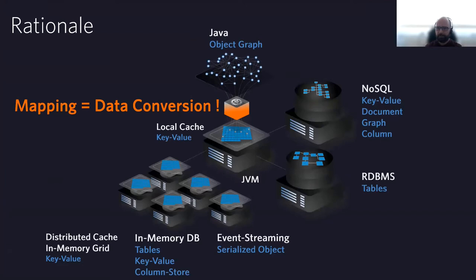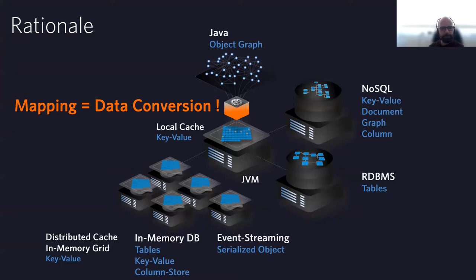If you look at the current state of the art, we have a lot of different solutions: relational databases, NoSQL products, distributed caches, grids, event streaming, and so on. But every solution has the same drawback regarding Java — we have to map and convert our data, and that's where a lot of performance is lost and a lot of complexity comes in. There are always two different data models needed, and you have to adapt your Java classes to the underlying storage.